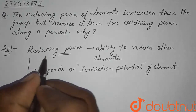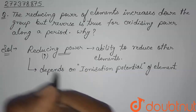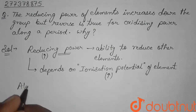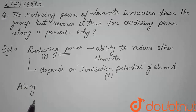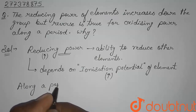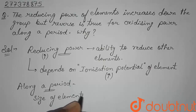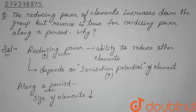We will discuss what trends we see in the size of the elements. Along a period in the periodic table, the size of the elements decreases due to high nuclear charge. Effective nuclear charge increases along a period, which is why the size of elements decreases.